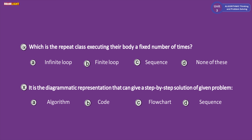Question nine: which loop repeats, executing a body a fixed number of times? The options include infinite loop, finite loop, sequence, and none of these. The correct answer refers to a finite loop — one that has a limit and runs a fixed number of times.